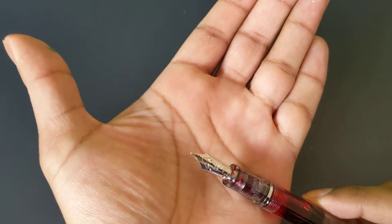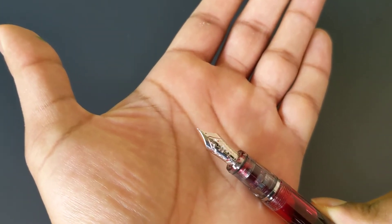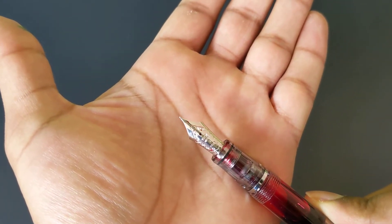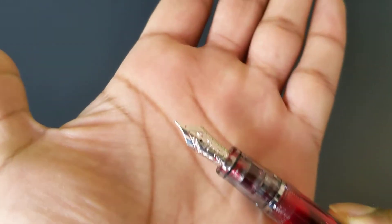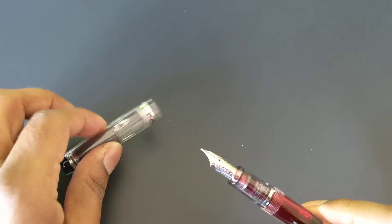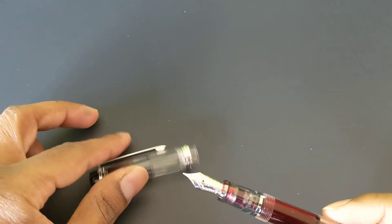This is the Pilot number five nib. It is 14 karat gold, coated in rhodium so it's a silver color. This is the medium fine or fine medium. The number five nib size is the same one you get on the Pilot Custom 74. Very nice pen.